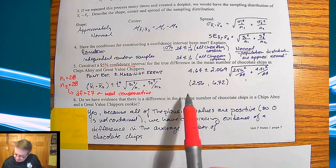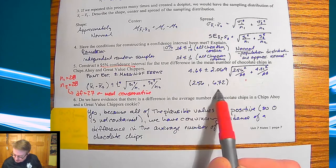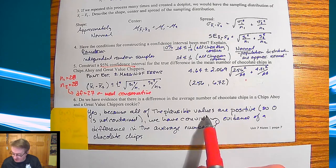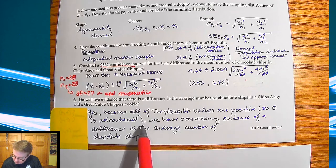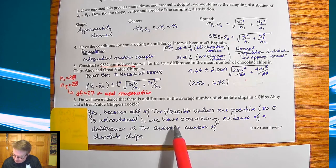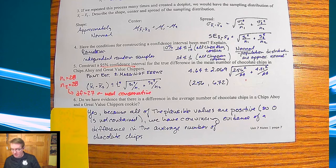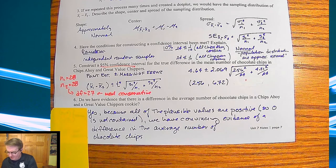Yeah, because all the plausible values here are positive, right? So that means that zero isn't an option. And it's just like what we did back with proportions. So zero isn't contained in that. So then, therefore, we have convincing evidence of a difference in the number, in the average number of chocolate chips in the cookies.